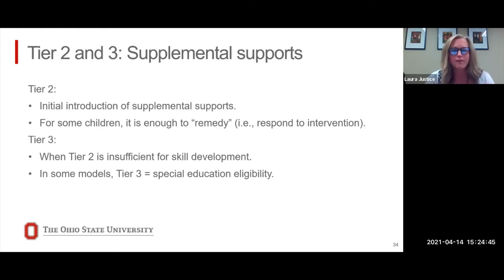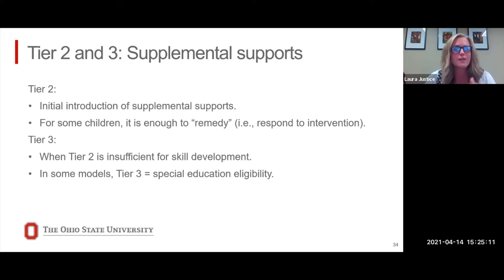Tier two is usually that first added tier. Kids might get this extra supplemental support for a year, and in some models it's two years. The idea is that we add on tier three when children are not sufficiently responding to tier two. In the classic models of response to intervention approaches, you have tier one, tier two, and tier three, and it's that tier three that's synonymous with identification of a reading disability. Conceptually, you have a child who's had phenomenal tier one instruction, an add-on support via tier two for several years, and at tier three you have reasonable evidence that even in the context of good instruction, this child may in fact have a reading disability.